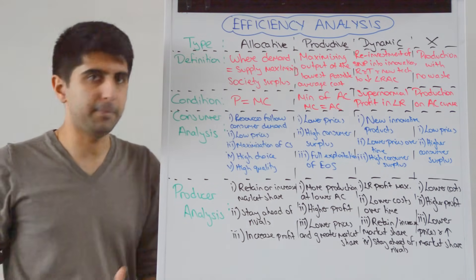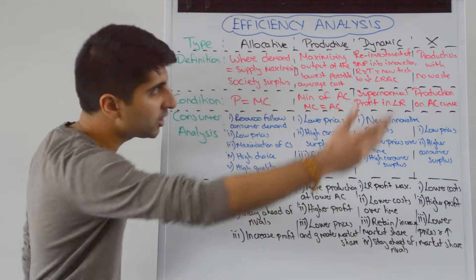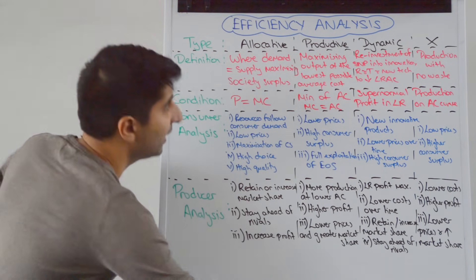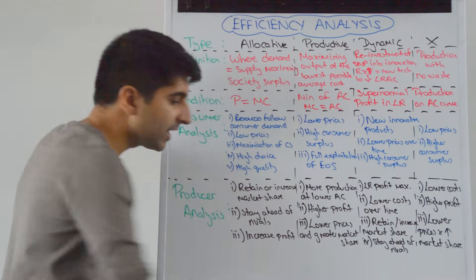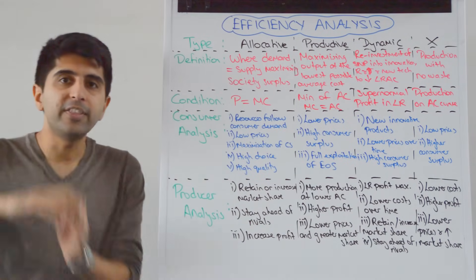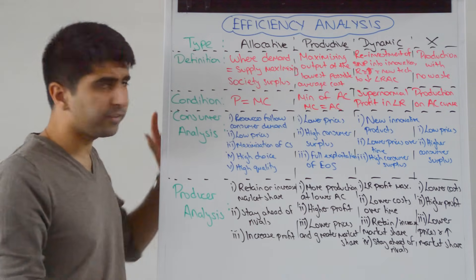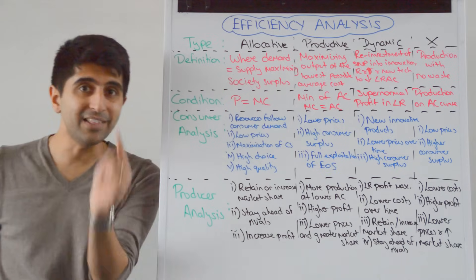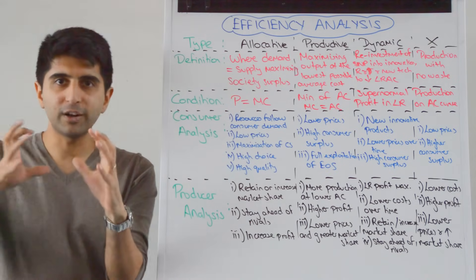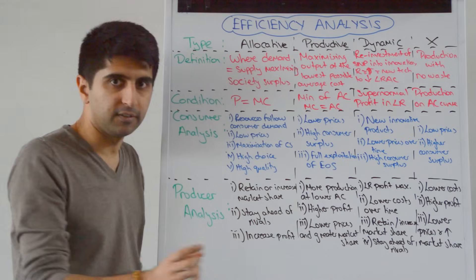What about dynamic efficiency? The definition of dynamic efficiency is reinvesting supernormal profit into innovation, into R&D - that should say R&D, not R&T - research and development, and into new technology. The idea is to lower long-run average costs over time. What's the condition for this to take place? Supernormal profit needed in the long run. So long-run existence of supernormal profit can allow for dynamic efficiency to take place.